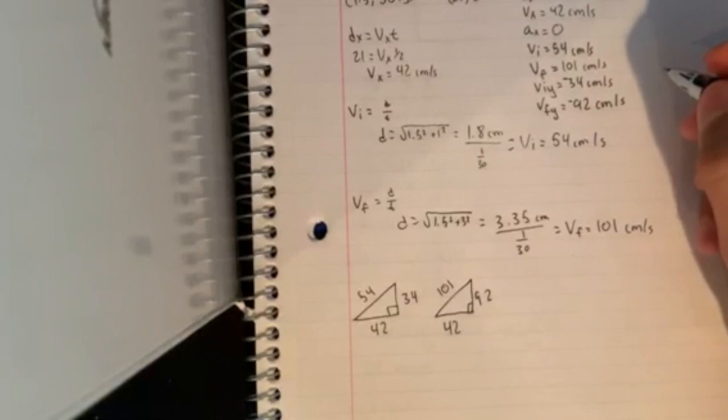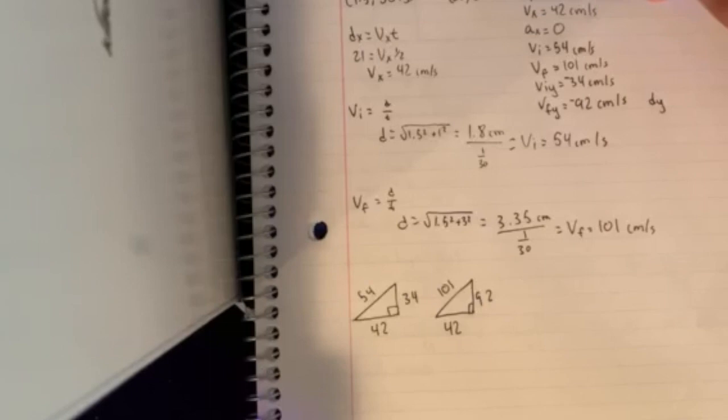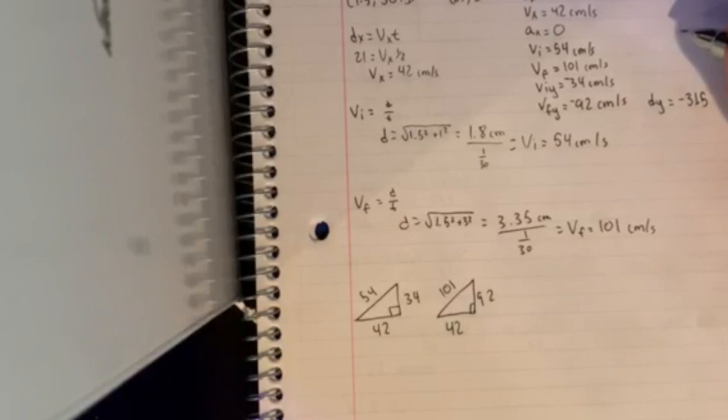We also need d of y, which we can get from these points. You start at 31.5 and hypothetically go down to zero, so it's just negative 31.5. And now that you have all these variables, you have to solve for a of y.